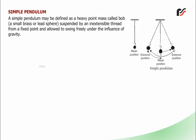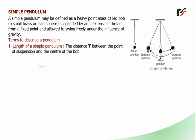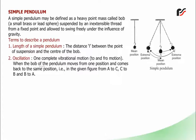Simple Pendulum: A simple pendulum may be defined as a heavy point mass called a bob — a small brass or lead sphere — suspended by an inextensible thread from a fixed point and allowed to swing freely under the influence of gravity. Terms to describe a pendulum: 1. Length (L) — the distance between the point of suspension and the centre of the bob. 2. Oscillation — one complete to-and-fro vibrational movement; when the bob moves from position A to C, C to B, and B back to A.